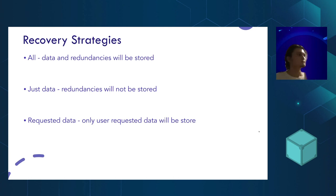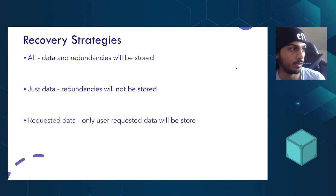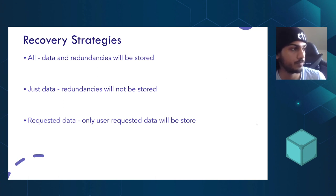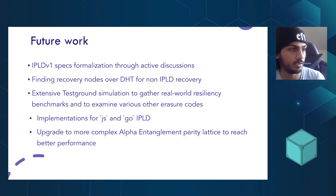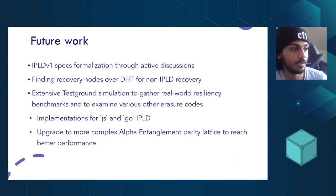In the interest of time, there are some vital use cases where storing data and redundancies would be important, even if it means bearing a little more cost. And then there are more average cases where you just want to get the data and keep the data. We want to have these different kinds of strategies. The future really holds for community discussions — we want to talk with the community, see what ideas you have, and how we can implement this both for JavaScript and Go IPFS.